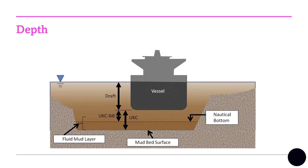Waters with small water depths or channel widths are considered restricted waters. The relative width of a navigable waterway is the ratio of the waterway's width to the width of the ship. When the ratio of channel width to ship width is less than or equal to 1, the ship's maneuverability is significantly affected.